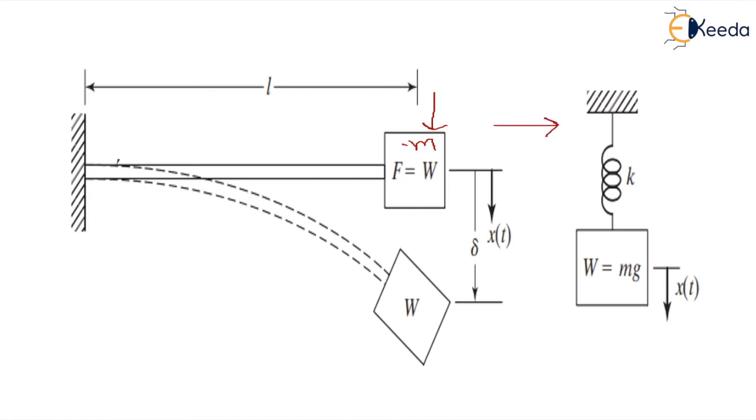We can convert it into a lumped system. We can convert this mass into an inertia body. That means we have to take into consideration the mass of this rigid body, which we also call the inertia body.